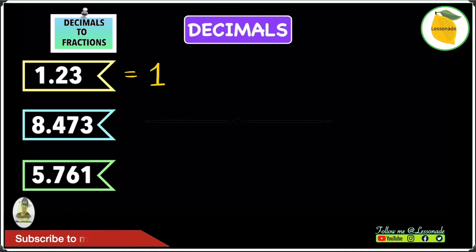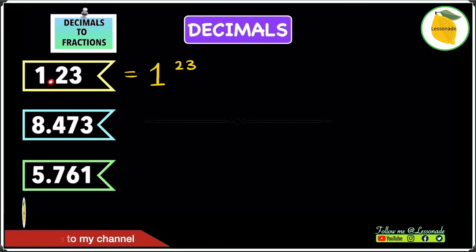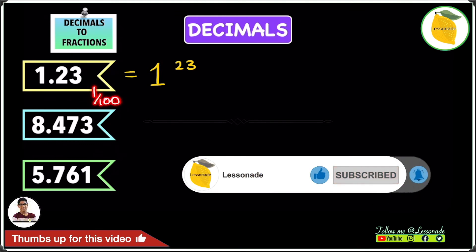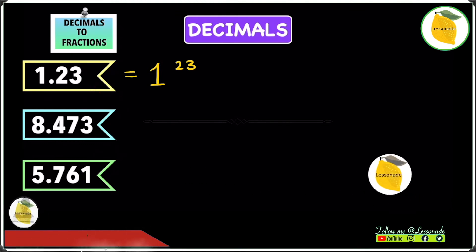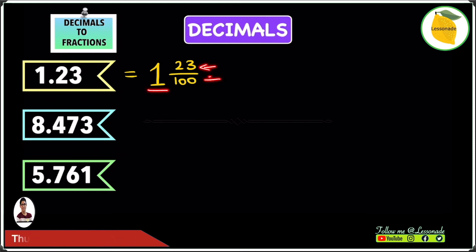Next, we find the numerator — it's the number after the decimal point, which is 23. Write the 23, then count the number of digits after the decimal point, which is 2. So 2 places after the decimal point is hundredths, and therefore our denominator will also be 100. That gives us an answer of 1 and 23 over 100.